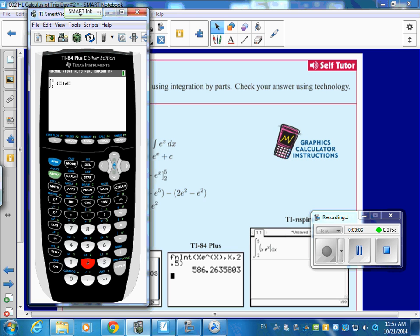And then it just gives you the integral. So you just go two. And then we're going to go to five, right? And then the function is going to be xe to the x. And then don't forget the little dx. And then it gives you that answer pretty quick.